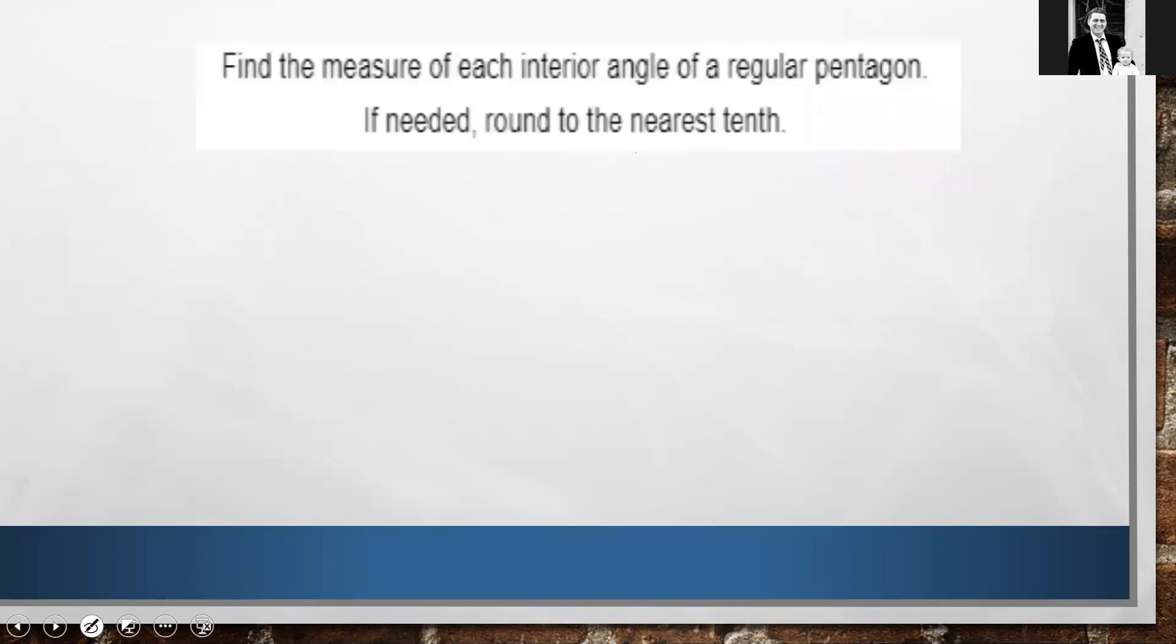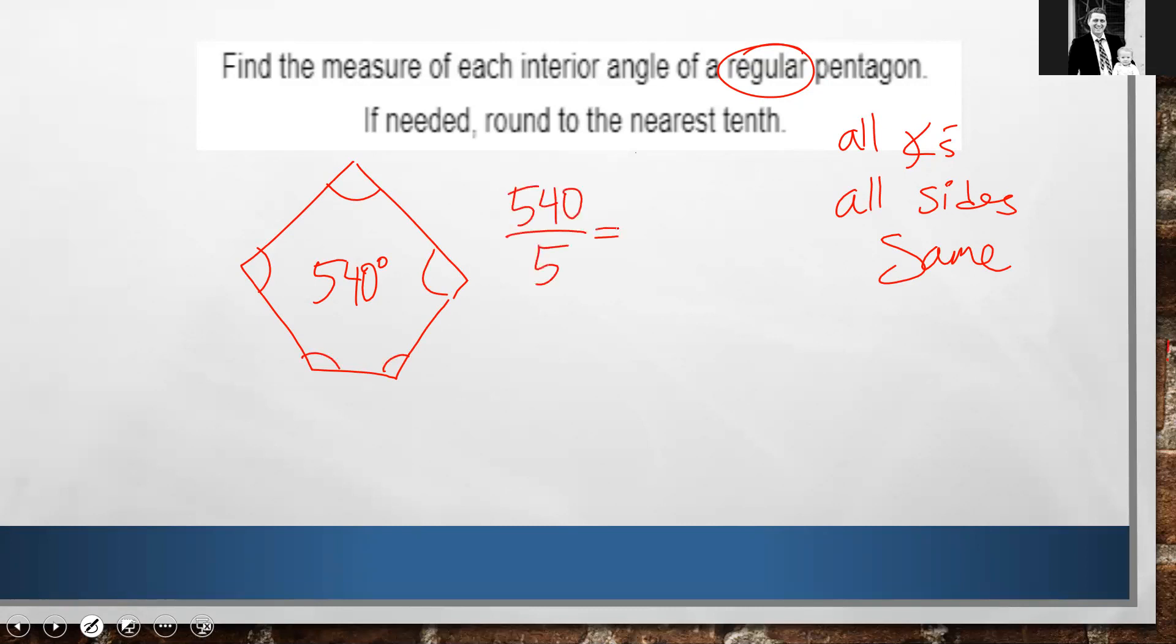Now it says, find the measure of each interior angle on a regular pentagon. Okay, so regular pentagon means that all your angles and all your sides are the same. So inside this pentagon, which we just computed on the last problem, had 540 degrees on the inside. What is just one of those angles if they're all the same? Well, we're going to take our 540, we're going to divide by five, and that is going to give us 108. Just one of these angles is 108. They're all 108, so they can add up to 540.